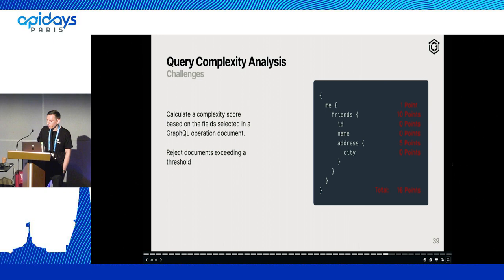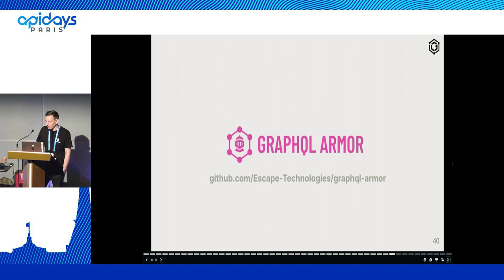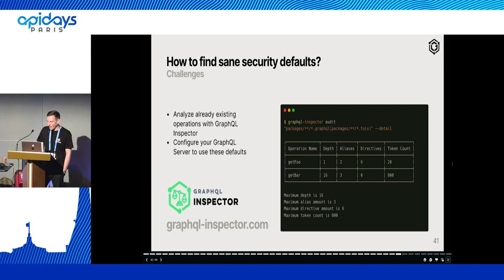Another approach that's also very popular is query complexity analysis, where you give a score to each field, calculate the total score, and if it exceeds a certain limit, just reject the operation. The great guys from Escape have a solution for that if you're working with GraphQL.js — I hope they'll talk more about this in detail in the next talk.